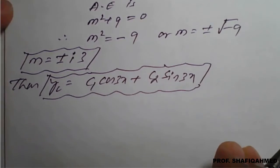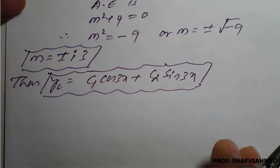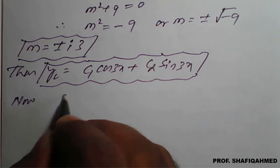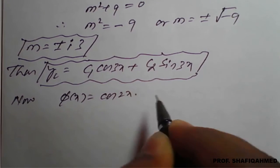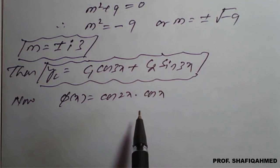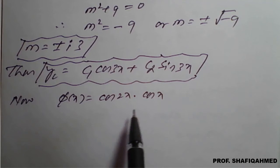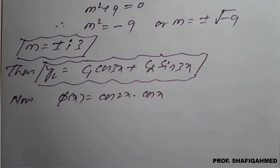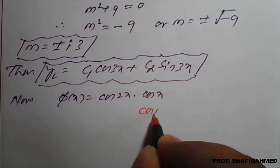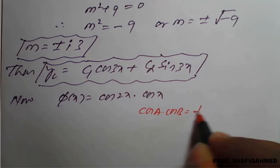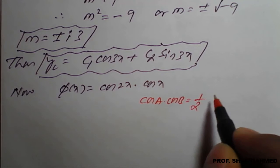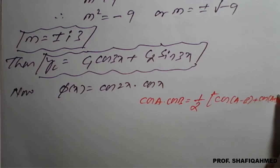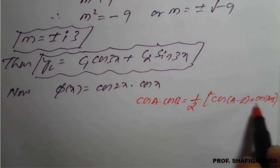Now with the complementary function found, we go for the particular integral to reach the general solution. The value of φ(x) is cos(2x)·cos(x). Since type 2 involves a single cos or sin but here we have a product of two cosine functions, we use the cos A·cos B formula: cos A·cos B = (1/2)[cos(A − B) + cos(A + B)].